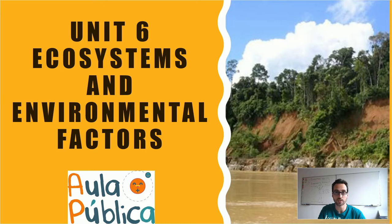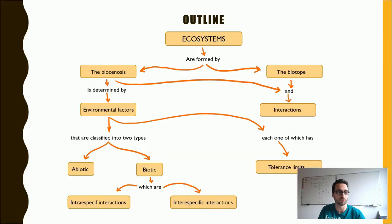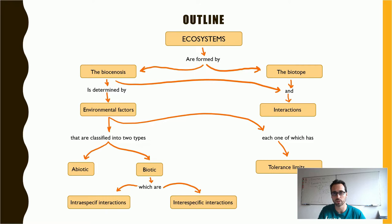The purpose I wanted to do for you is to comment on this outline about the unit. We're going to talk about ecosystems, which are formed by two different components: the biocenosis and the biotope. The biotope is made up of components that are not living — they haven't got life. The biocenosis, on the other hand, are the living things that compose the ecosystem.